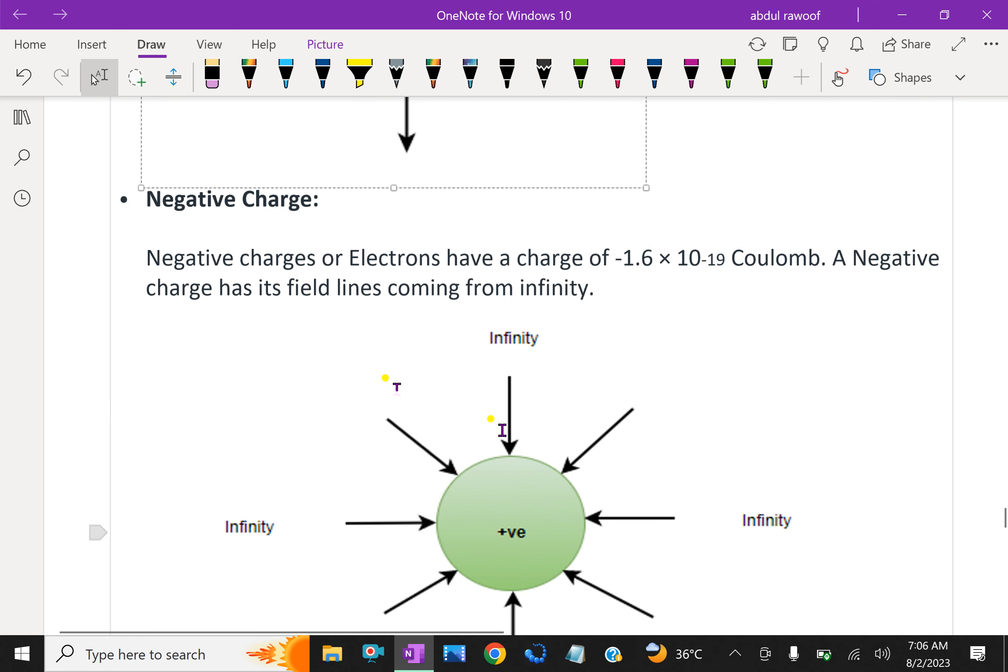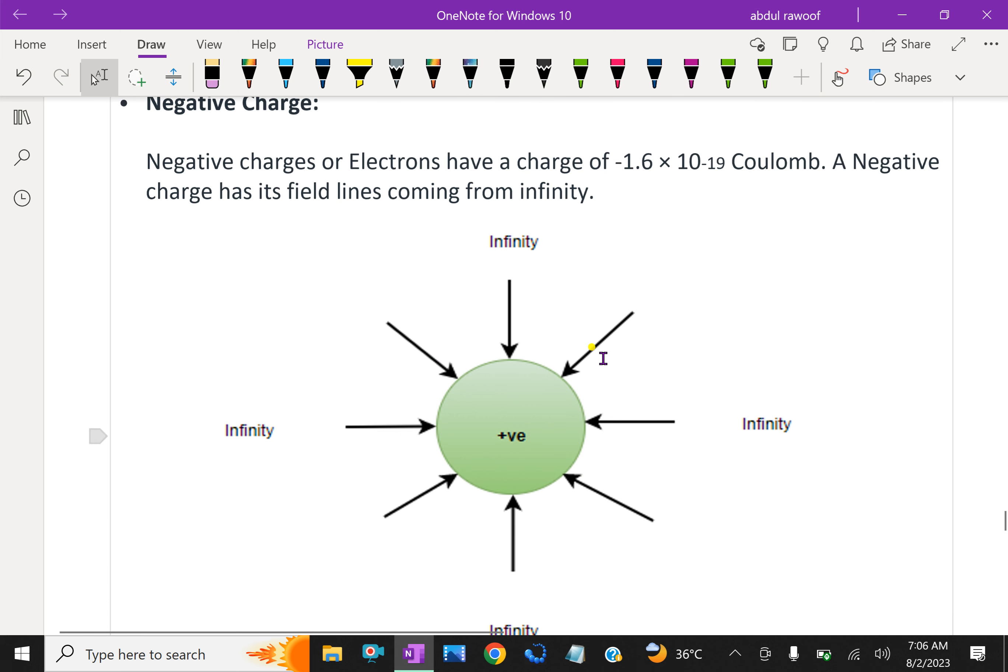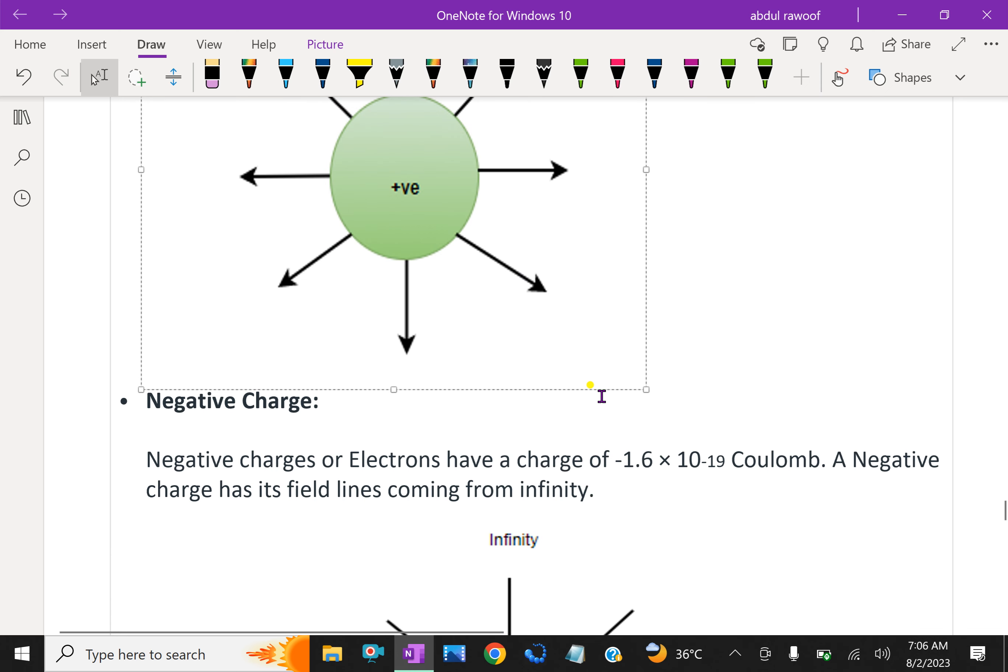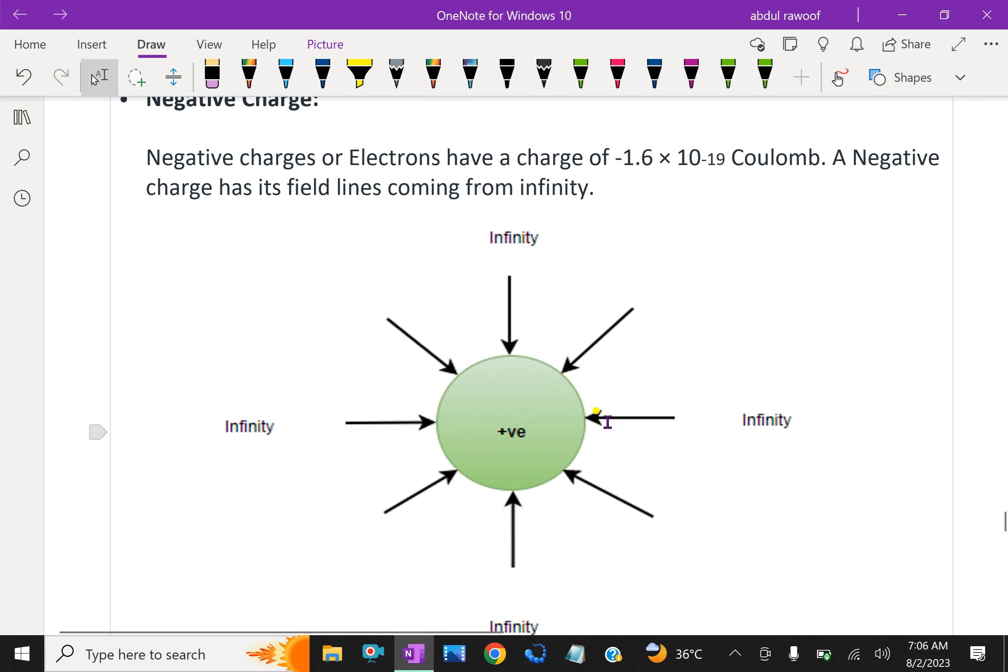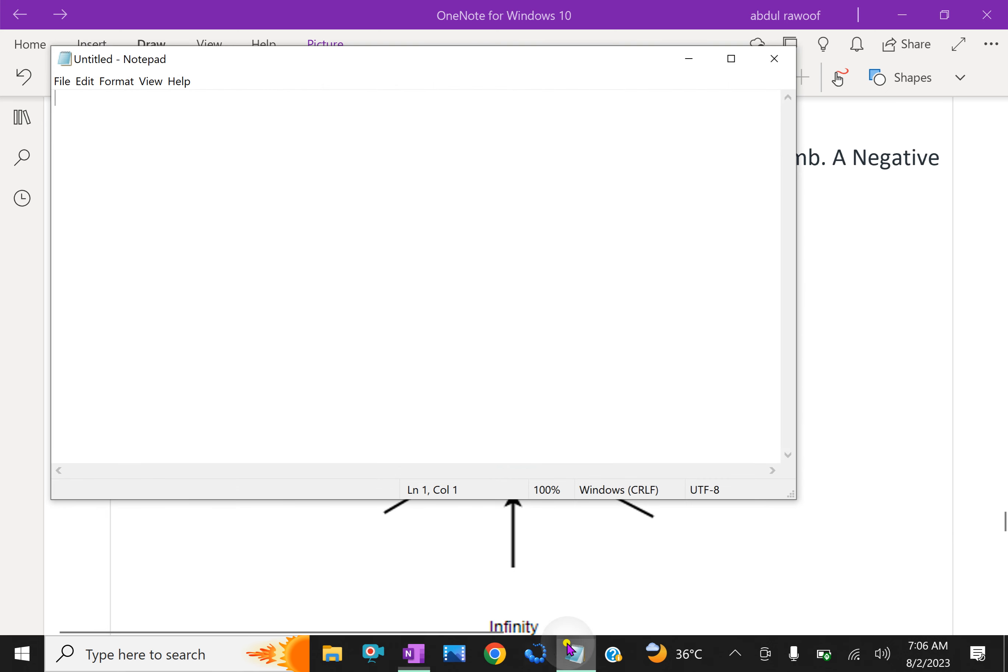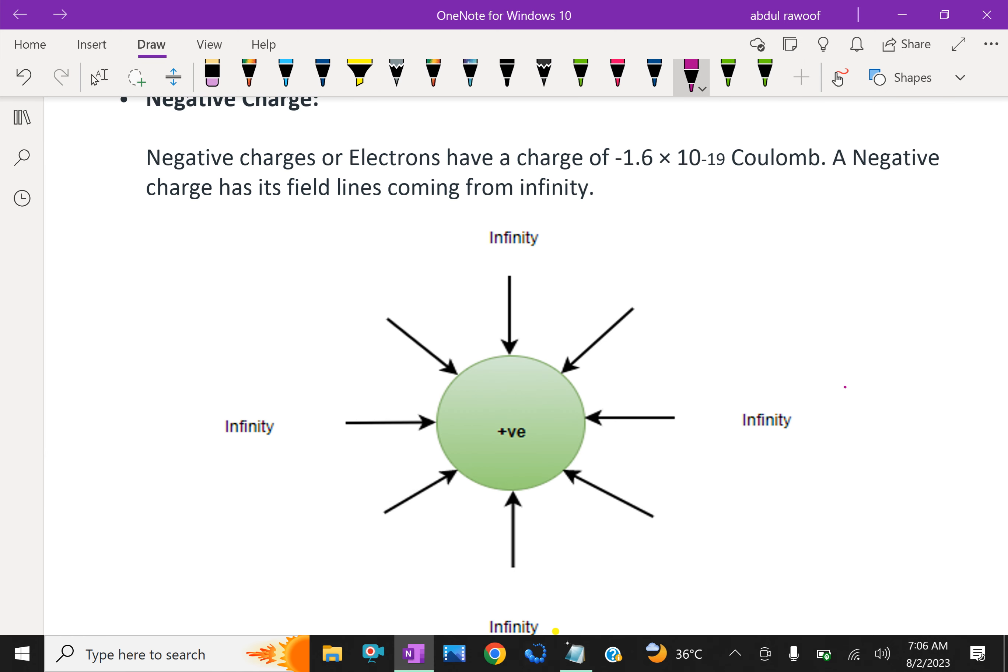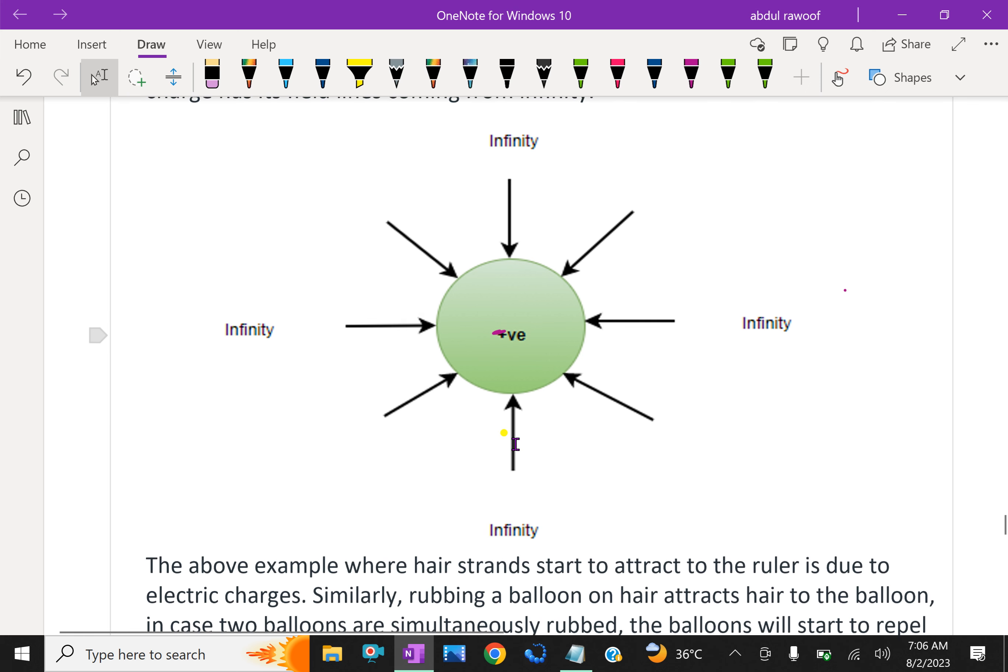Negative charge or electrons have a charge of -1.6 × 10^-19 coulomb. A negative charge has its field lines coming from infinity to that charge. From infinity, they come to that point charge, which is considered as a negative charge.